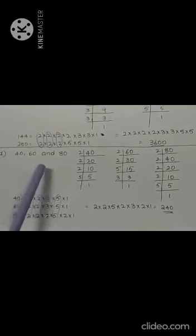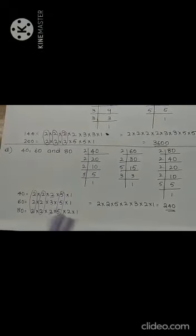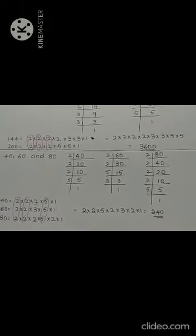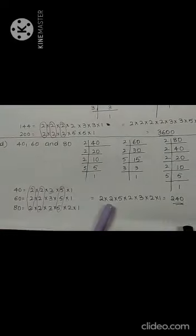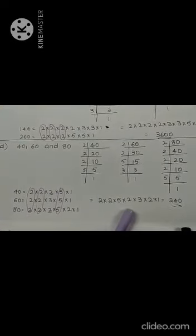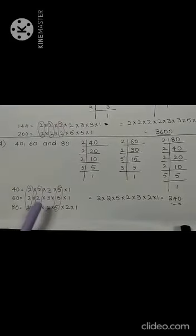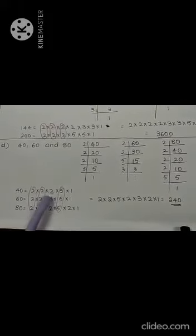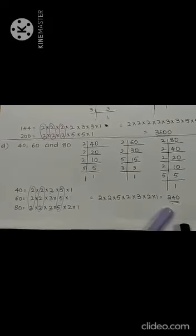Next, the fourth problem: find LCM of 40, 60, and 80. I have written all the factors and observed the common factors. Because 3 numbers are given, first I take the factors common in all 3 — I have encircled those. Then for the second step, observe which factors are common in any 2 numbers — I have underlined those. Encircled means common in all 3; underlined means common in 2. I have taken all of these and got the LCM.